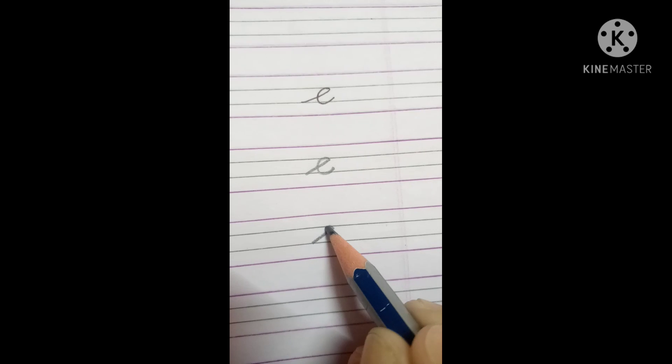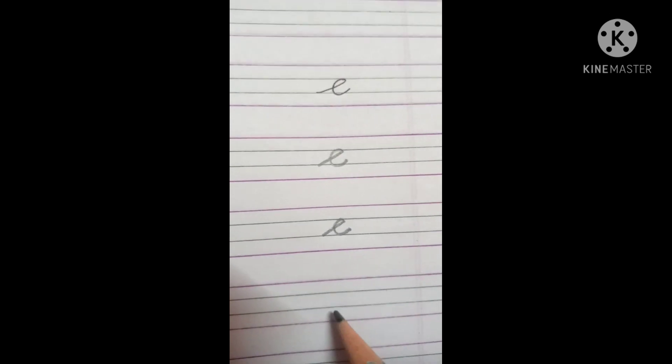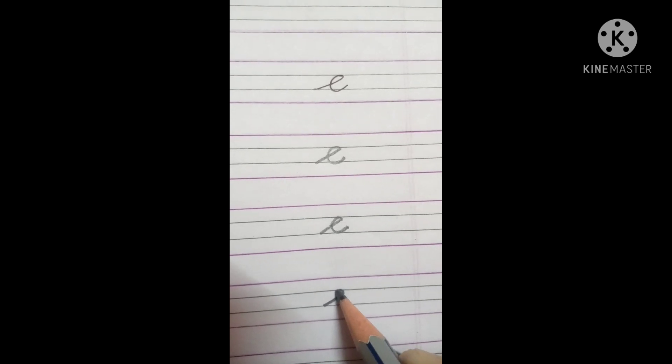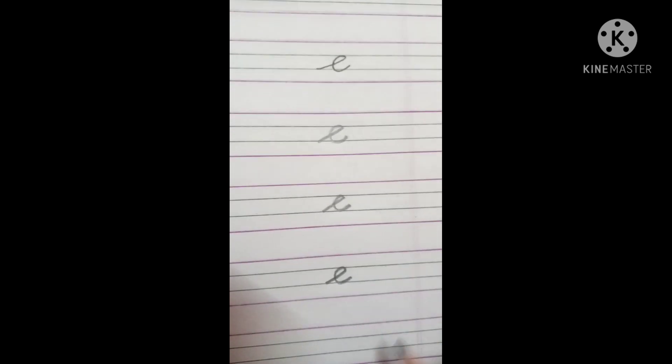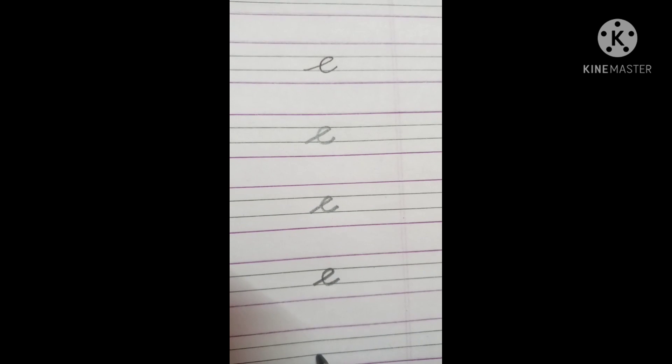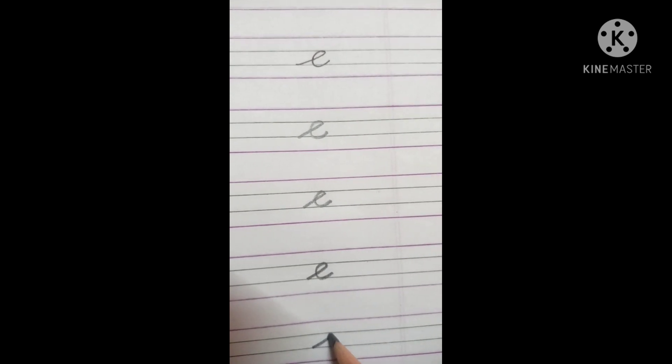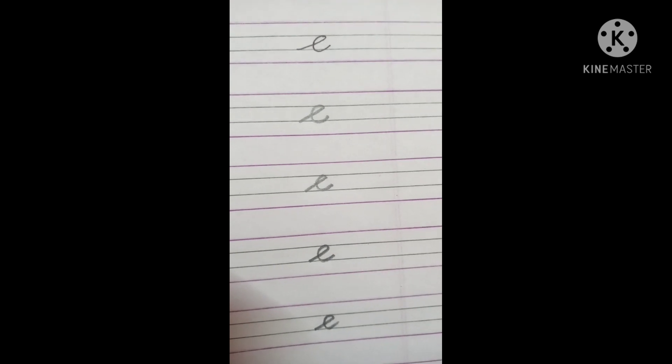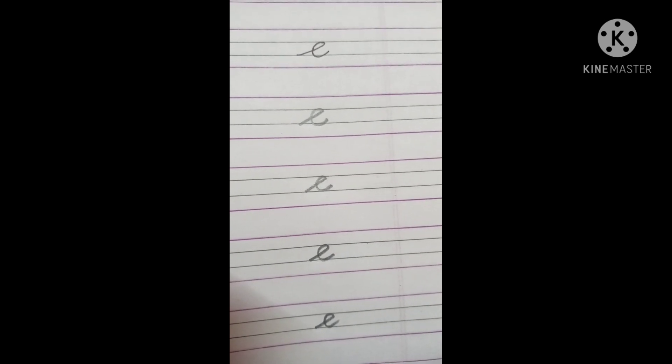Cursive letter E. The sound of letter E is eh. E eh, egg. E eh, engine. E says eh. Sound of letter E is eh.